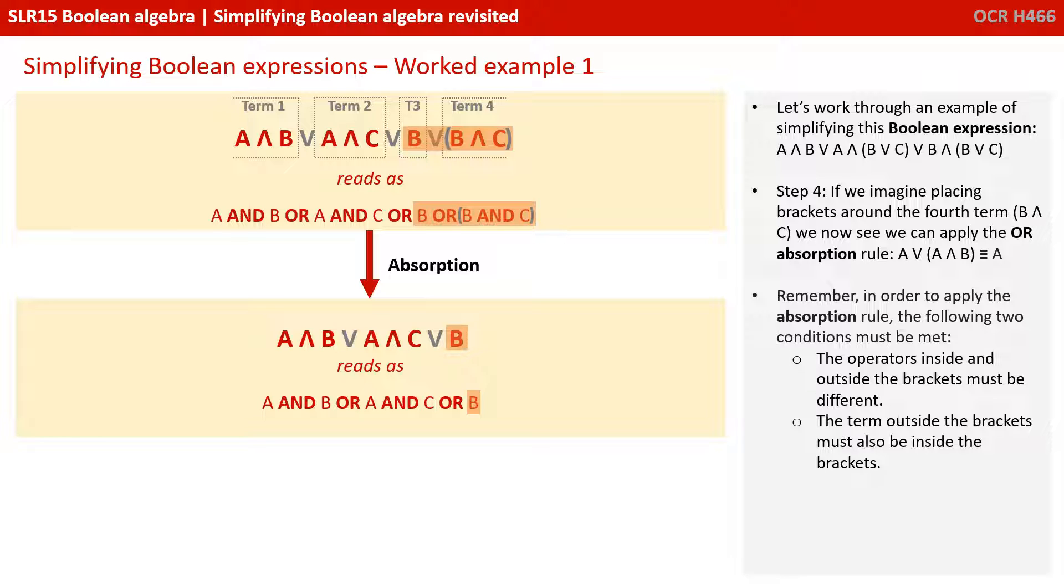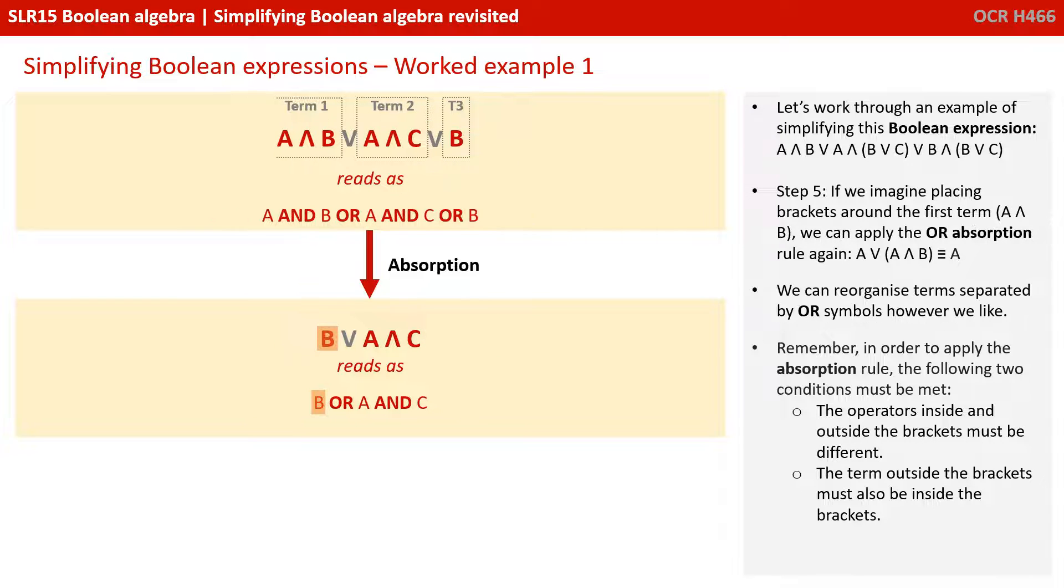Remember, in order to apply absorption rule, we need to meet two conditions. The operator inside and outside the brackets must be different. Well, they are. It's an OR and AND. And the term outside the brackets, that's a B, must also be inside the brackets. Well, it is.